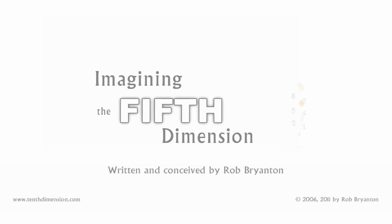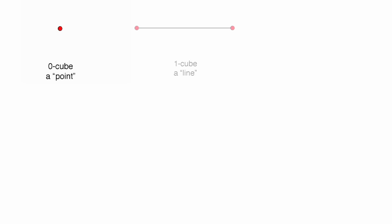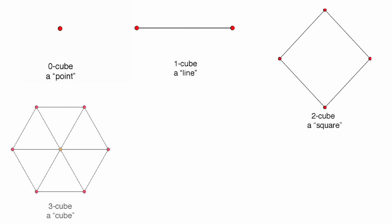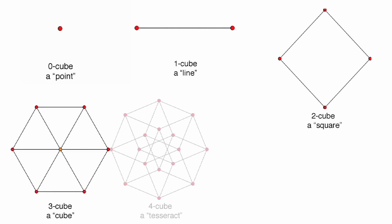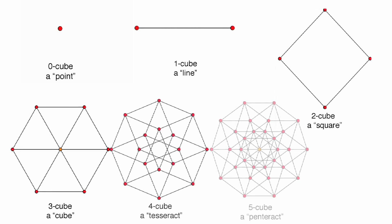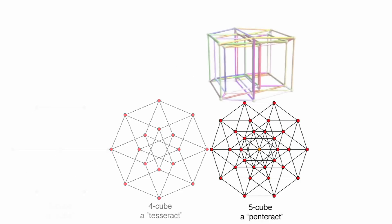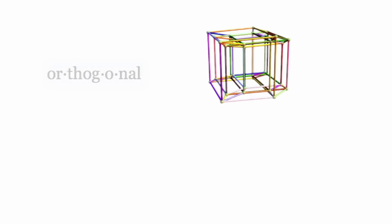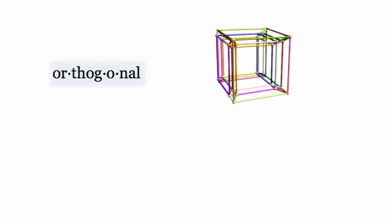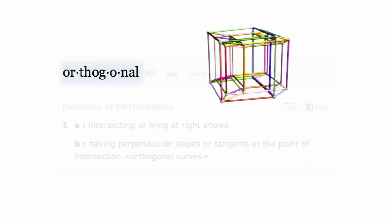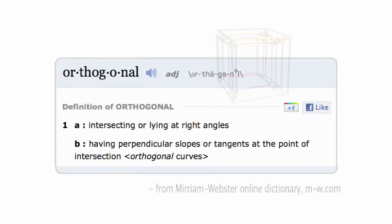Imagining the fifth dimension. We keep returning to this idea. Every time we add a spatial dimension, we need to find a way to think about how the new dimension is at right angles to the ones that have come before. Another word for this concept is that each new dimension is orthogonal to the previous ones.